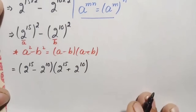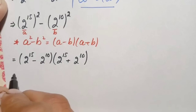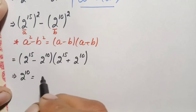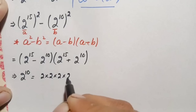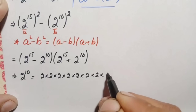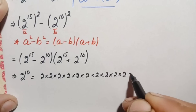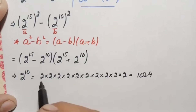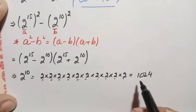Now we will find the value of 2 raised to power 10 and 2 raised to power 15. For 2 raised to power 10, we multiply 2 ten times: 2×2=4, 4×2=8, 8×2=16, 16×2=32, 32×2=64, 64×2=128, 128×2=256, 256×2=512, 512×2=1024. So 2 raised to power 10 is 1024, a very famous number.